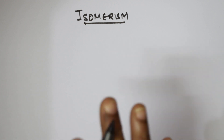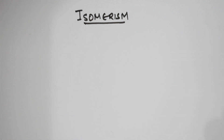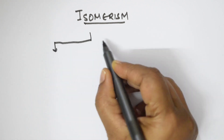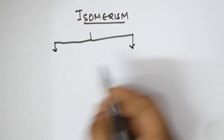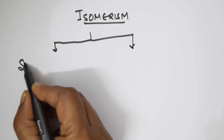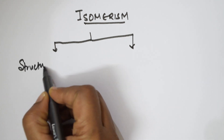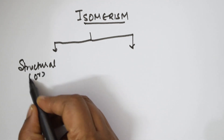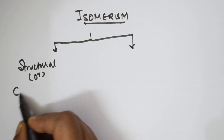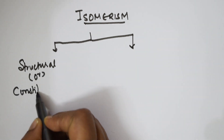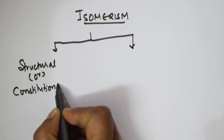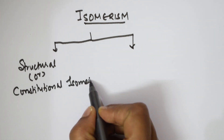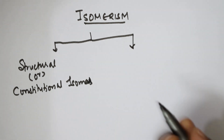Now, what is important for naming the alkenes is the classification of isomerism. Isomerism is classified under two categories. The first type is structural isomerism, also called constitutional isomerism. These are called structural or constitutional isomers.